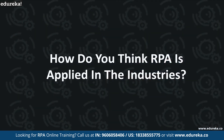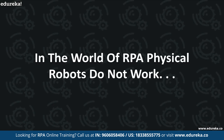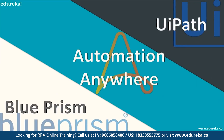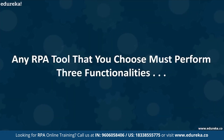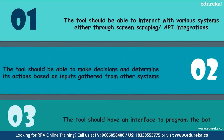RPA is applied in industries using an enormous amount of tools. In the world of RPA, physical robots do not work — instead, software tools are used. The most popular tools are UiPath, Blue Prism, and Automation Anywhere. These tools thrive in the market because of their user interface, vendor experience, maintenance, and support. Any RPA tool you choose must perform three functionalities: it should interact with various systems through screen scraping or API integrations; it should make decisions based on inputs gathered from other systems; and it should have an interface to program the bot.